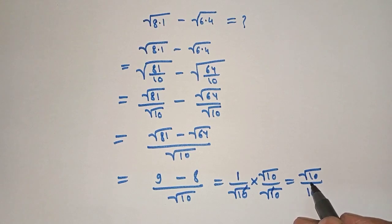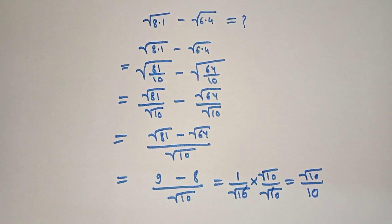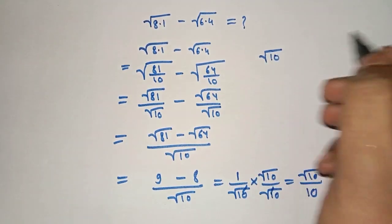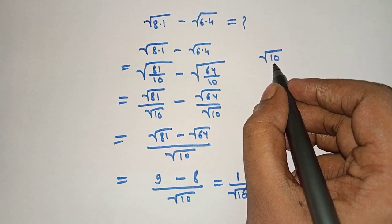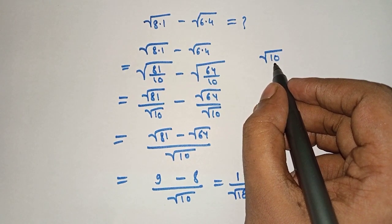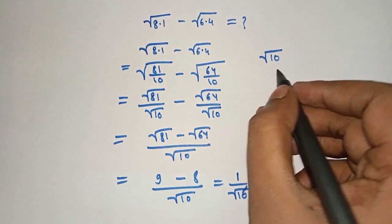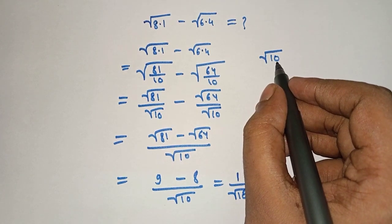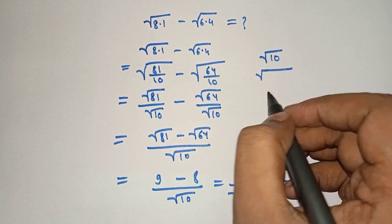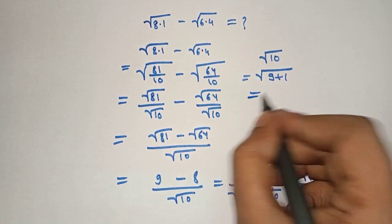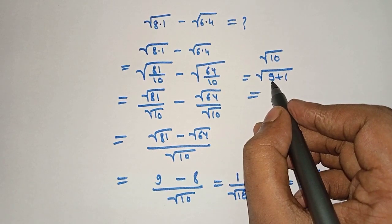Now we have to calculate the value of under root 10. Here is one trick to calculate the square root value. For under root 10, we find the closest perfect square, which is 9. We can write square root of 9 plus 1 equals 10.